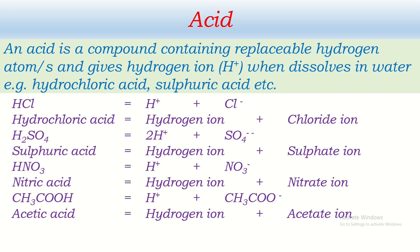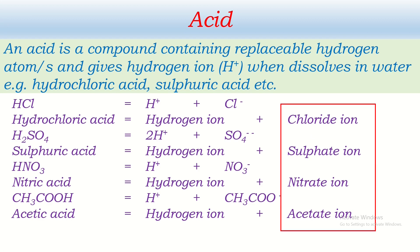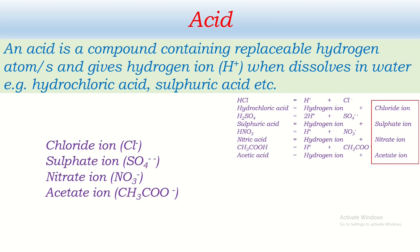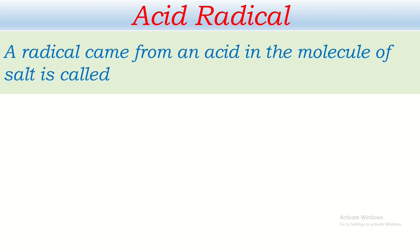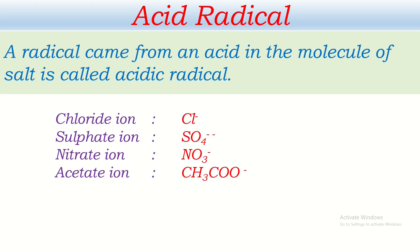Beside the hydrogen ion, there are other ions I want to highlight. These ions — chloride ion, sulfate ion, nitrate ion, acetate ion — are the ions other than hydrogen ion. All these are actually radicals, and these radicals are called acidic radicals because they came from acid. A radical that came from an acid in the molecule of a salt is called an acidic radical.